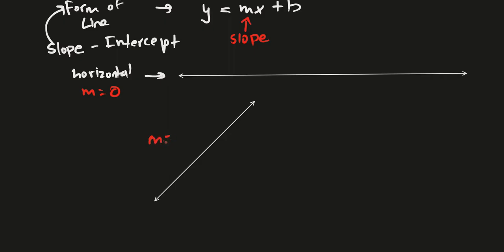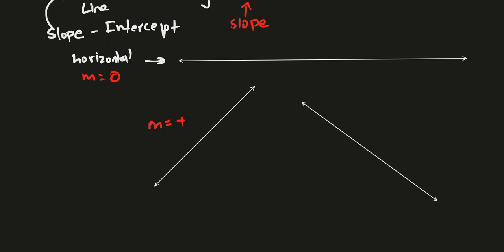If we had a line that was like this, the slope of this line — which is m — would be something positive, some positive number. And if we similarly had a line going in the other direction, this slope m would be negative, since it's going in that direction. So what is slope?